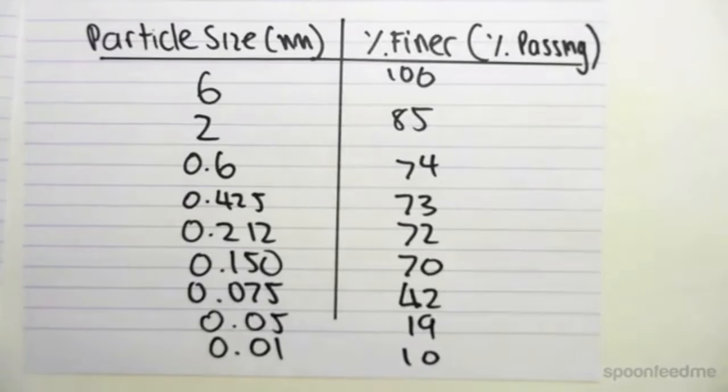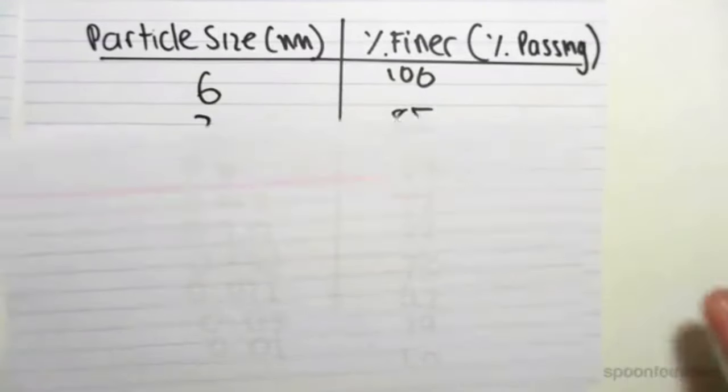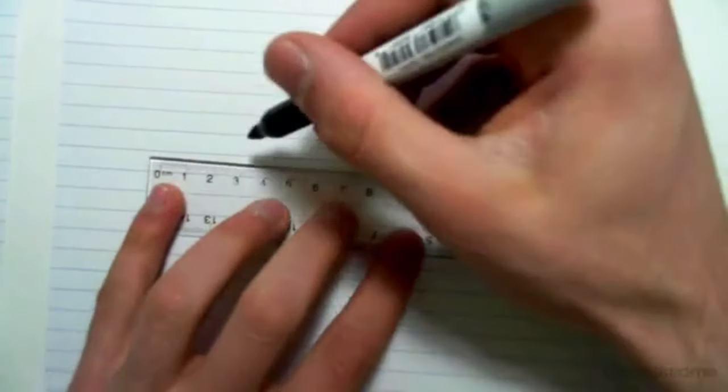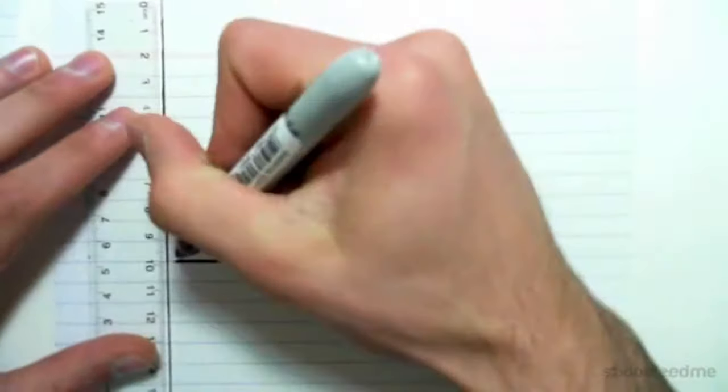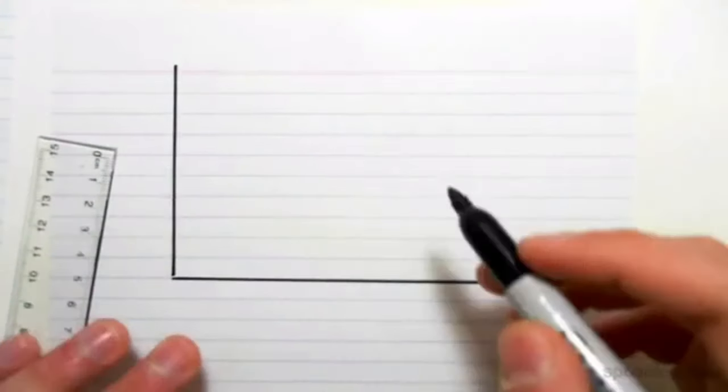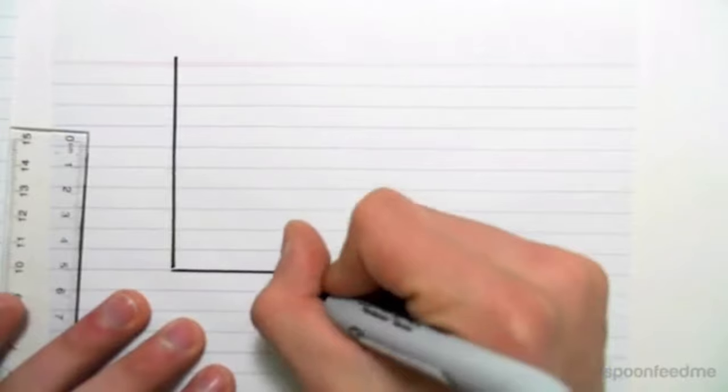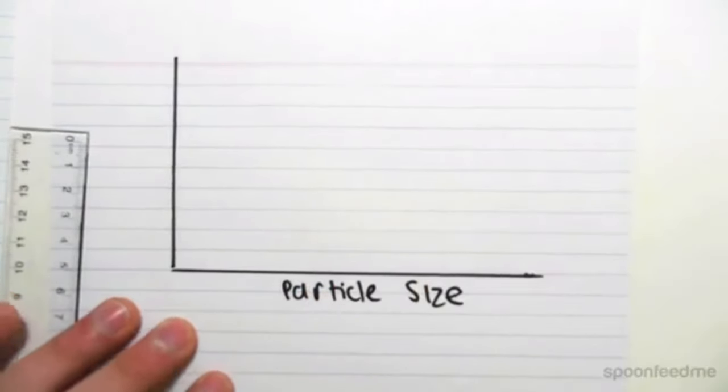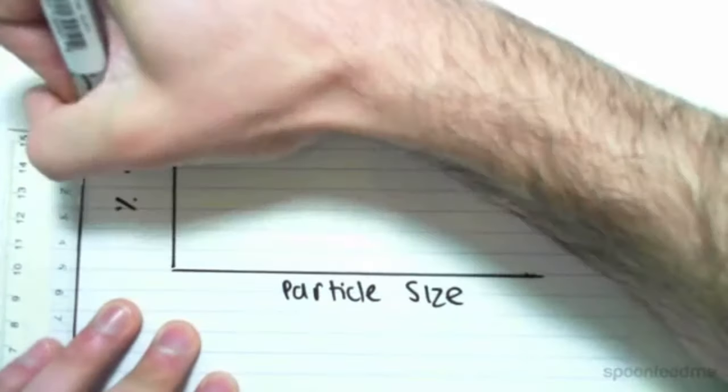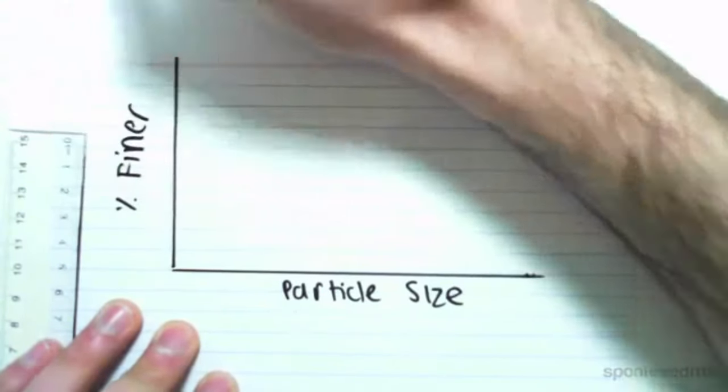And the final thing we're going to do, which is what we're going to be seeing in the next couple videos, is based on this information, we can then come and graph something called a grading curve. And all the grading curve is, it plots, a grading curve will plot the particle size against the percent finer.